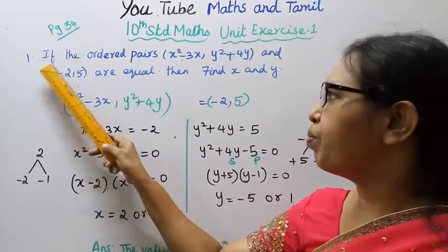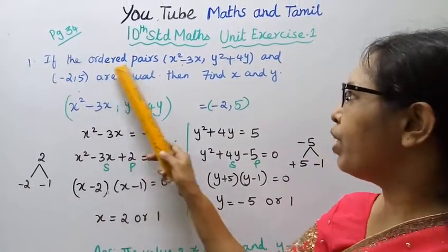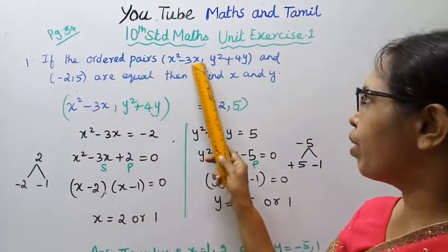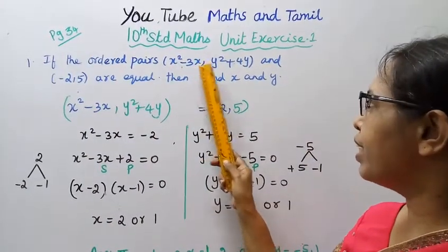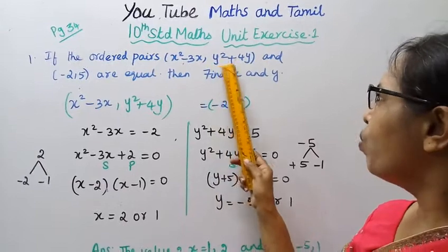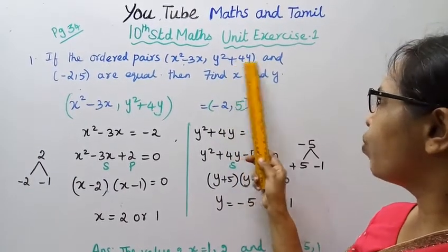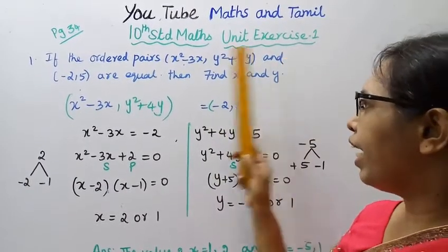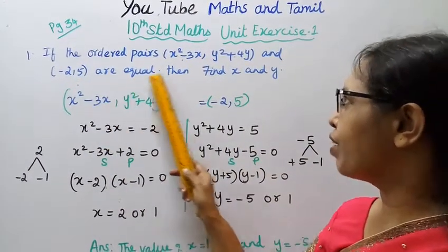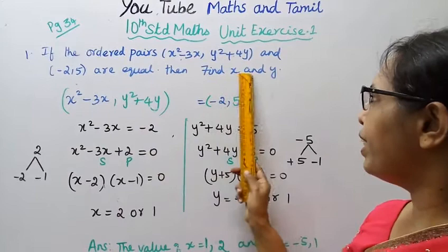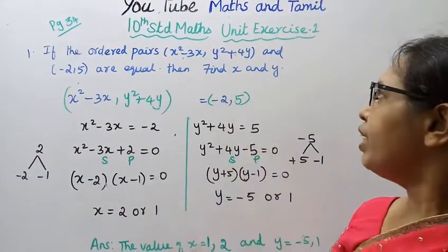First sum: If the ordered pairs (x²-3x, y²-4y) and (-2, 5) are equal, then find x and y.